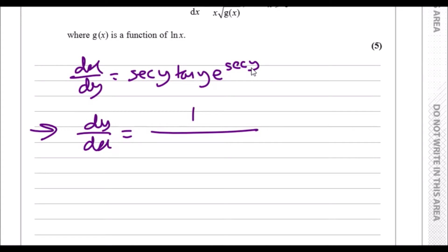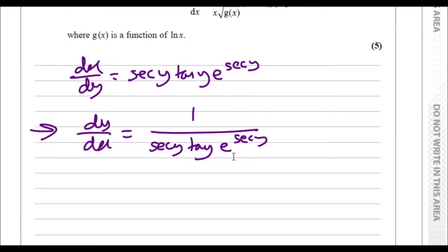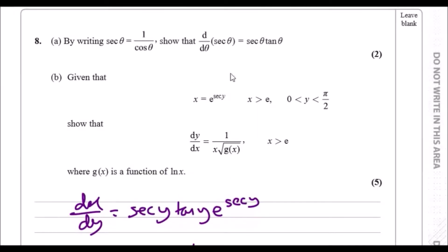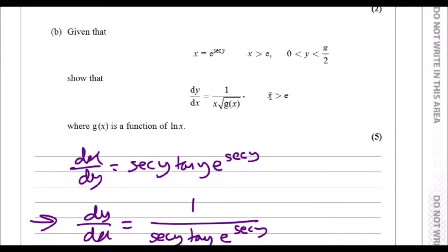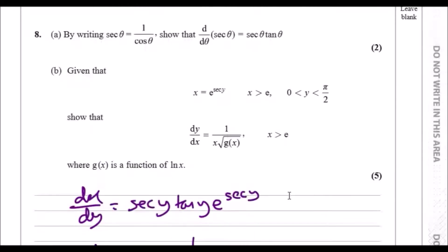All you want to do is flip these guys over to get dy/dx. So dy/dx equals 1 over everything I just said. Now everything inside the function has been converted in terms of x and we've got y's here. Looking back, x equals e to the sec y, so this e bit must be x.